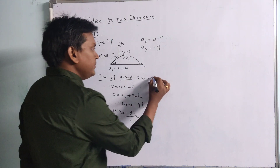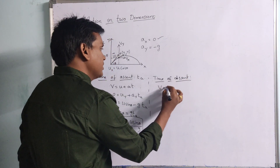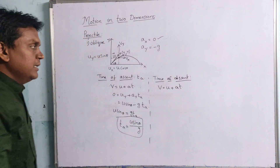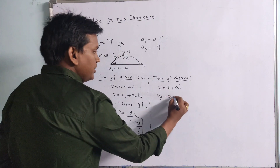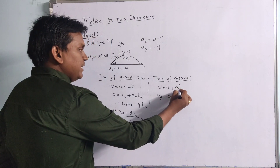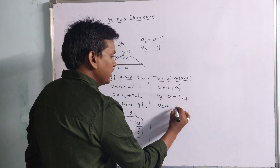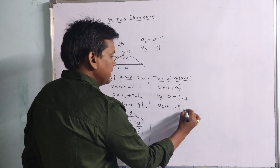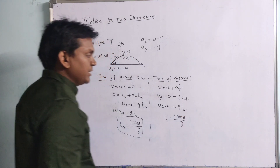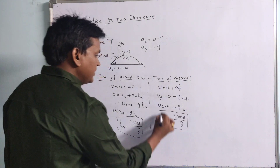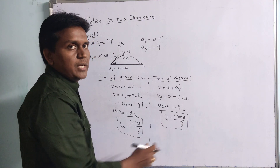In the same way, let us find the time of descent. Using v = u + at, here the initial velocity at the top is 0 and the final velocity is vy = u sin theta. So u sin theta = g × td, giving td = u sin theta / g. We got time of ascent as u sin theta / g and time of descent as u sin theta / g, so time of ascent equals time of descent.